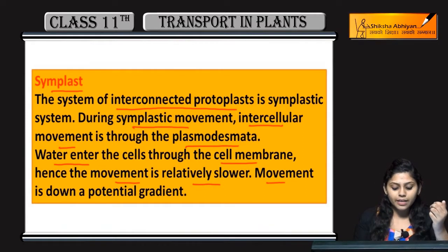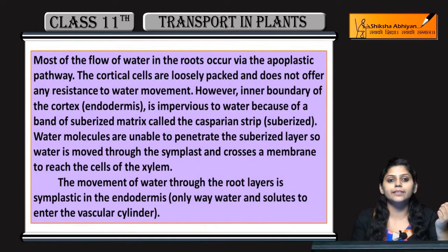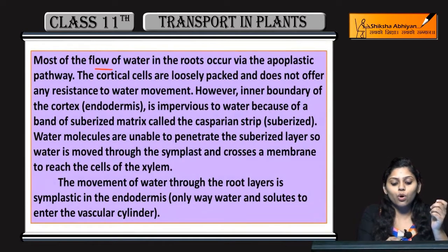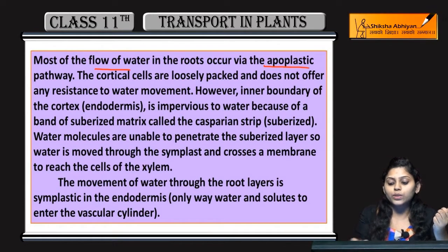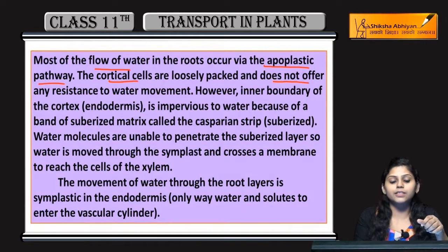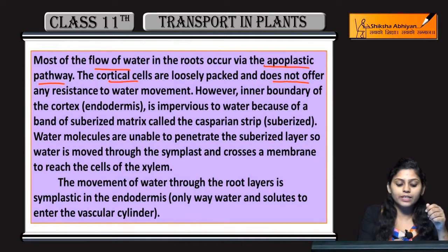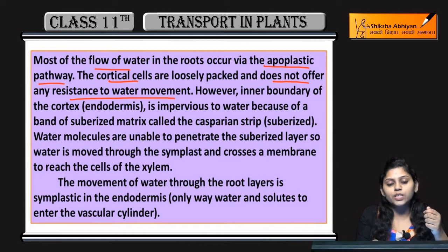Movement kaise hoti hai? Down the potential gradient. Roots mein jo maximum flow hai water ka, woh hota hai via apoplast pathway. Cortical cells jo hain, they are loosely packed and do not offer resistance — means water ki movement ko resist nahi karte.